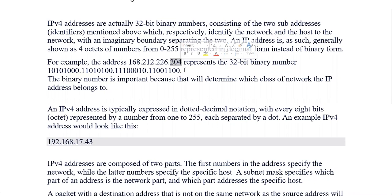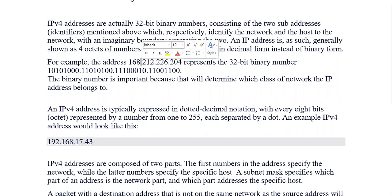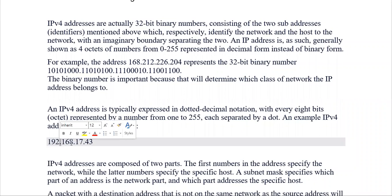Total 256 hosts एक octet में हो सकते हैं। The binary number is important because it will determine which class of network the IP address belongs to — उसके according यहाँ पर कुछ classes divide किये गए हैं जो हम आगे देखेंगे। An IPv4 address is typically expressed in dotted decimal notation, with every 8 bits — जिसको हम octets कहते हैं — represented by a number from 0 to 255, each separated by a dot। Example: 192.168.17.43।